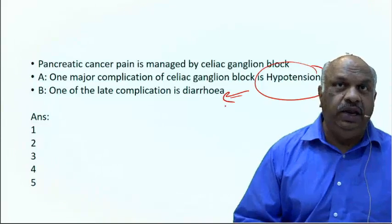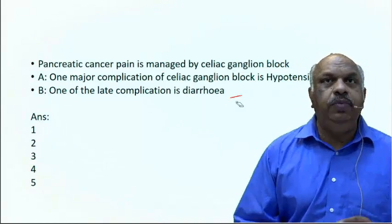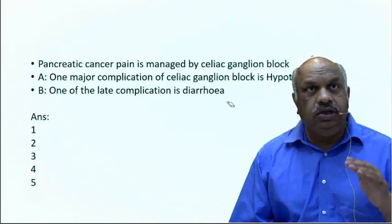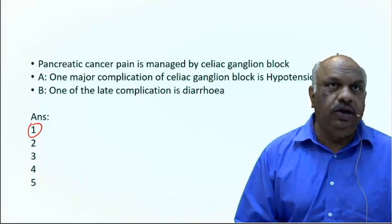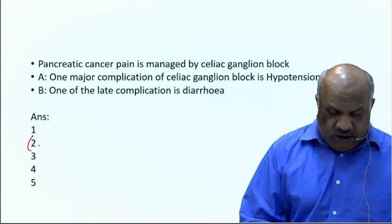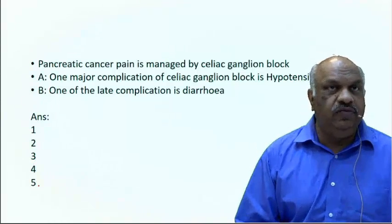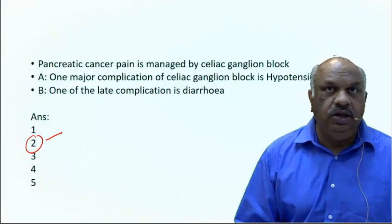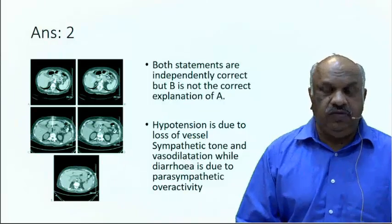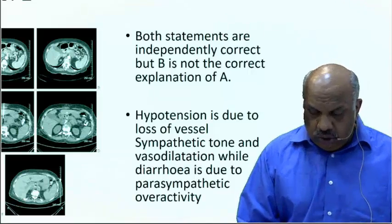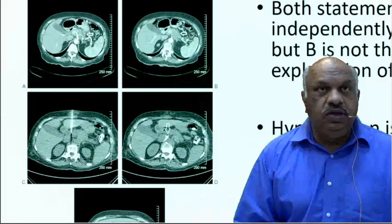Both A and B are correct, but hypotension is not due to diarrhea. Hypotension is due to sympathetic tone being lost and vessels getting dilated. So A and B are both independently correct, but B does not explain A. Hypotension is due to loss of vessel sympathetic tone and vasodilation, while diarrhea is due to parasympathetic overactivity.